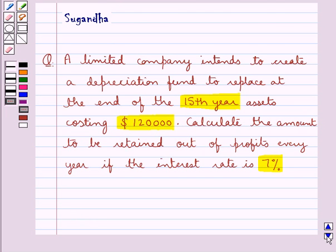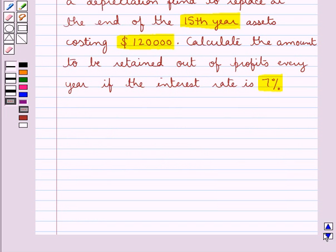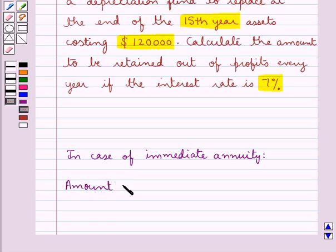Before we move on to the solution, let's discuss the formula to find out the amount of annuity in case of immediate annuity. In case of immediate annuity, the amount of annuity denoted by capital A is equal to small a upon i into 1 plus i to the power of n minus 1.